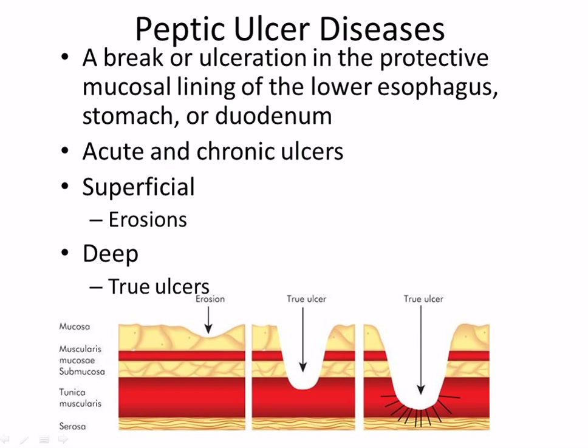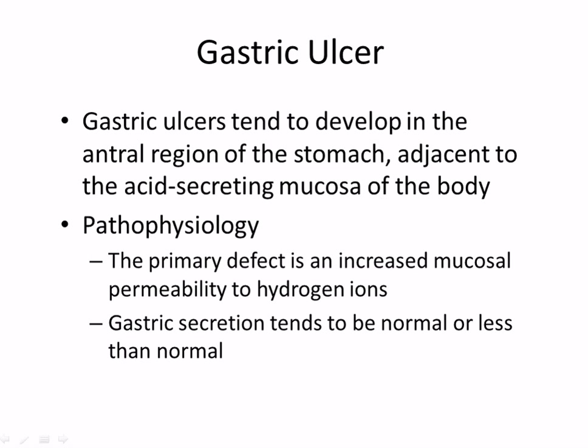Peptic ulcers progress through stages — superficial, then deeper through the mucosa and submucosa, until they hit the muscularis. Once it breaks through to the muscularis, all that stomach acid floods in and erodes faster and faster. You get a burning sensation that starts penetrating through the mucosa and into the submucosa, and if you're doubled over, it's probably very deep.